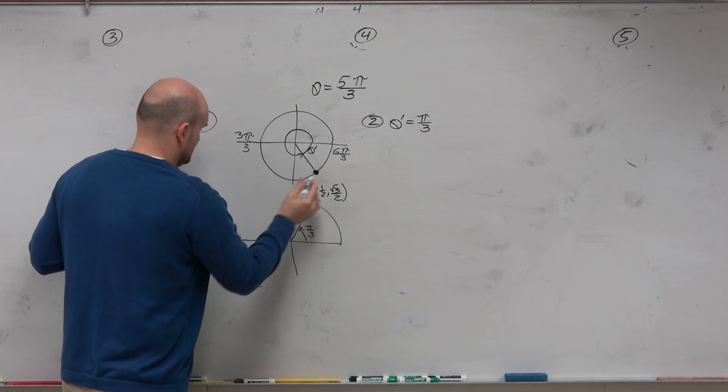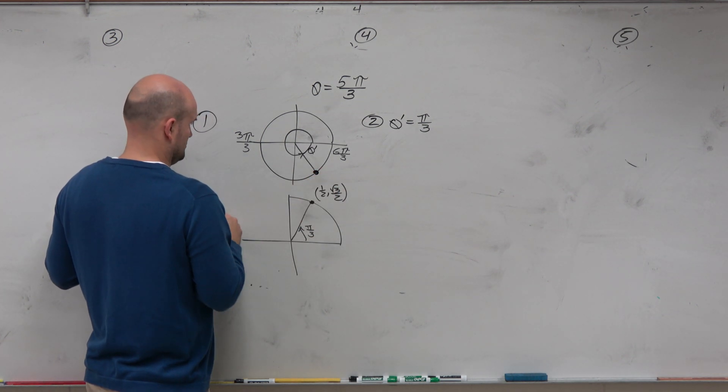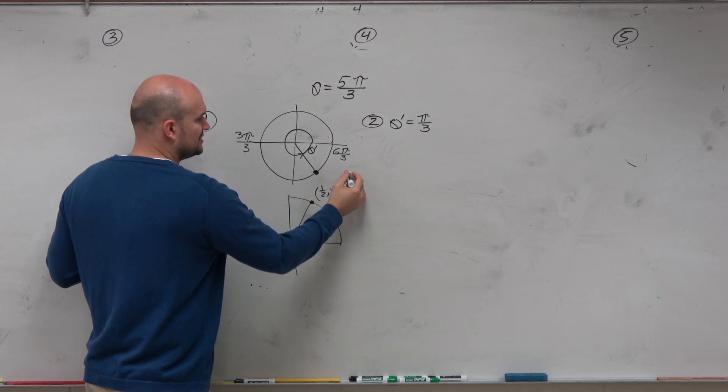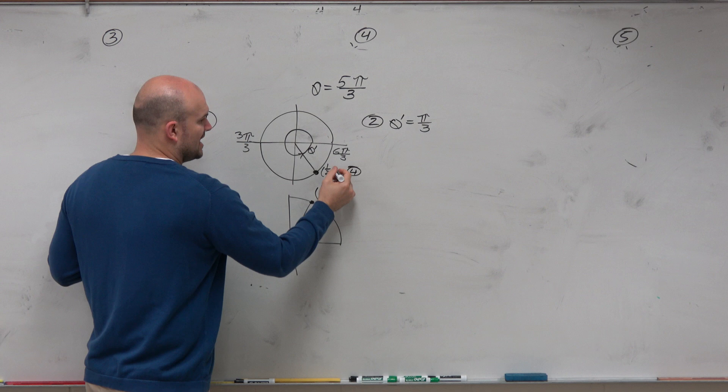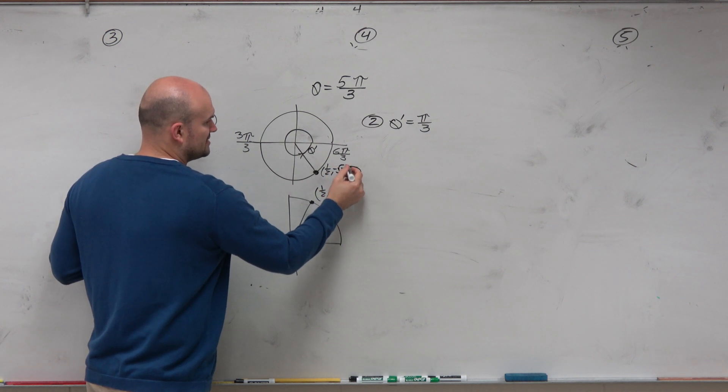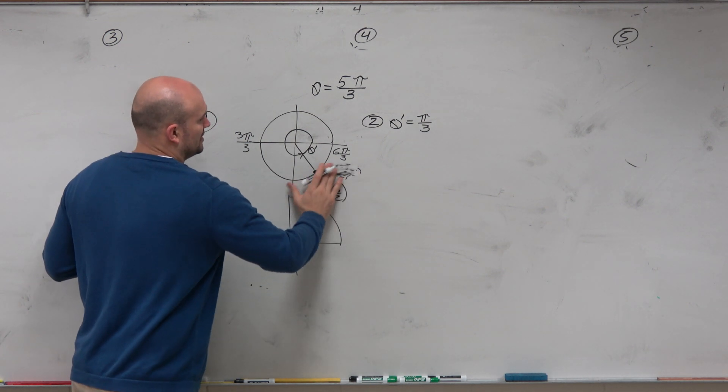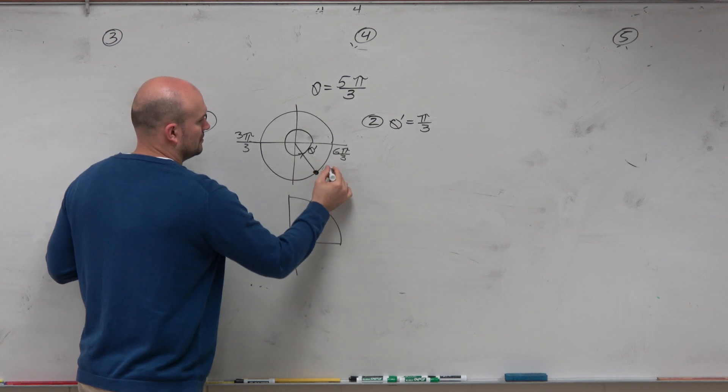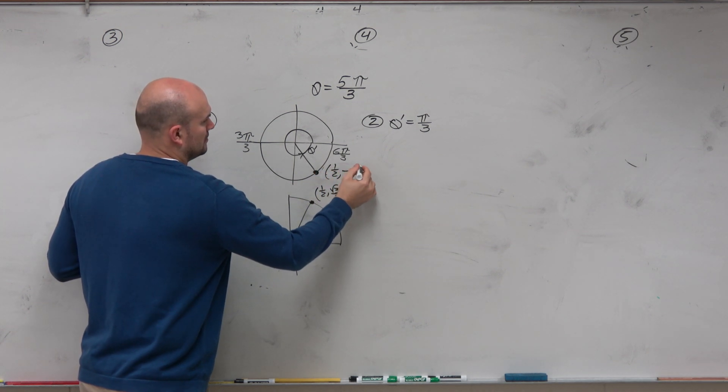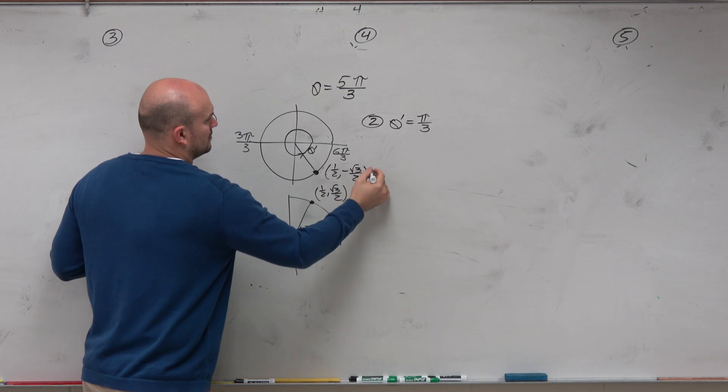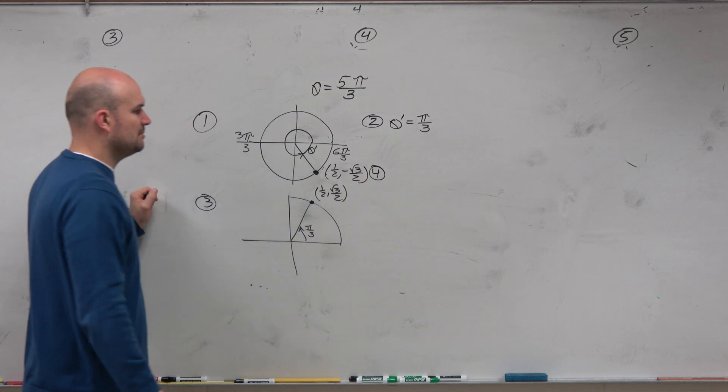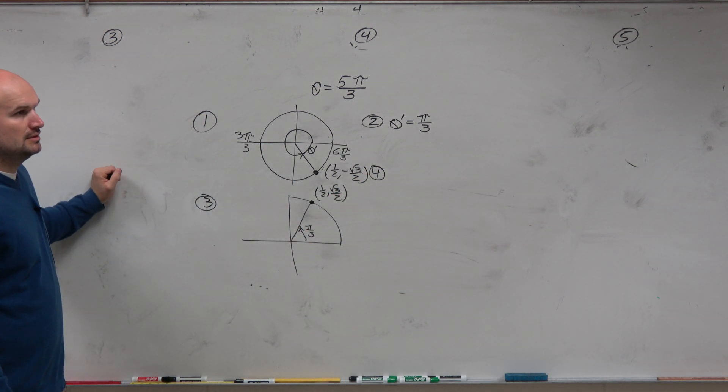So step number 4 is to find that coordinate point. Well, it's the same point. It's just now my y coordinate is negative. And that's step number 4. Cool? Anybody have any questions up to here?